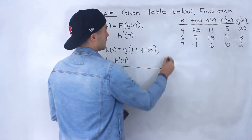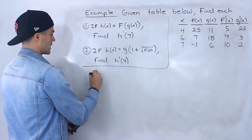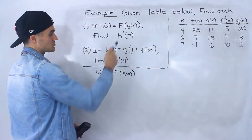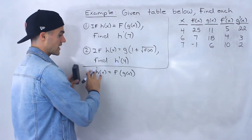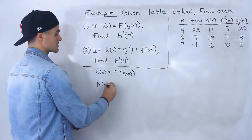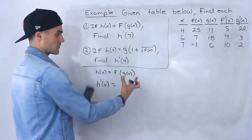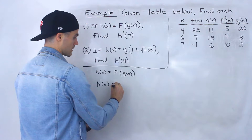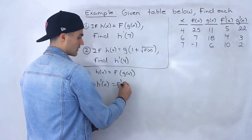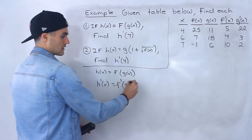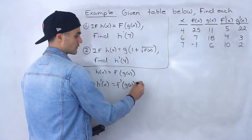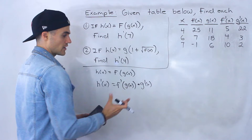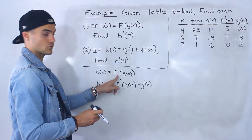Starting with number one, we have h of x equals f of g of x, and we have to find h prime of 7. Let's first find an expression for h prime of x by taking the derivative. Notice we have a function g of x within another function f of that function. So what we do is we take the derivative of the outside first, which would be f prime. The inside function stays the same, and then we multiply by the derivative of the inside function, which would be g prime of x.